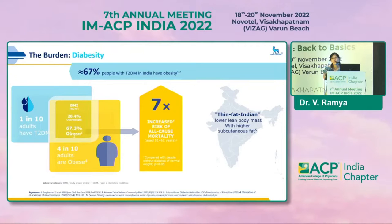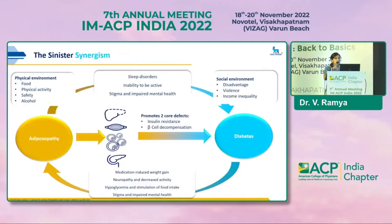There is an entity in Asian countries called 'thin fat Indians.' Though these individuals have normal BMI, they have abdominal adiposity, which is lipolytically active and responsible for most components of metabolic syndrome. This slide shows the interrelation between adiposity and diabetes, with various diverse risk factors including physical and social environment leading to adiposity and thereby to diabetes.